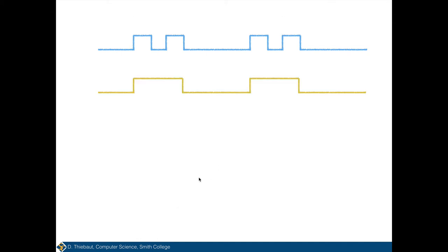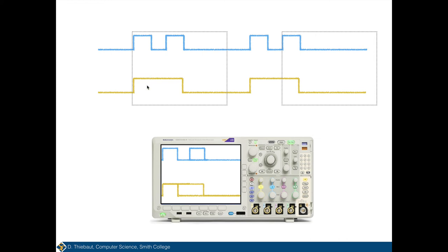If you have two signals on two different channels, you want the signal with fewer transitions connected to channel one, because the scope always looks for the low-to-high transitions of channel one. If instead you connect the blue waveform — the one with two pulses — to channel one, you'll have the same problem: sometimes the scope finds the first low-to-high transition of the blue signal, sometimes the second. When it displays these two windows very quickly in alternation, the first pulse looks fine but then there's sometimes a second pulse appearing, making the display unstable.